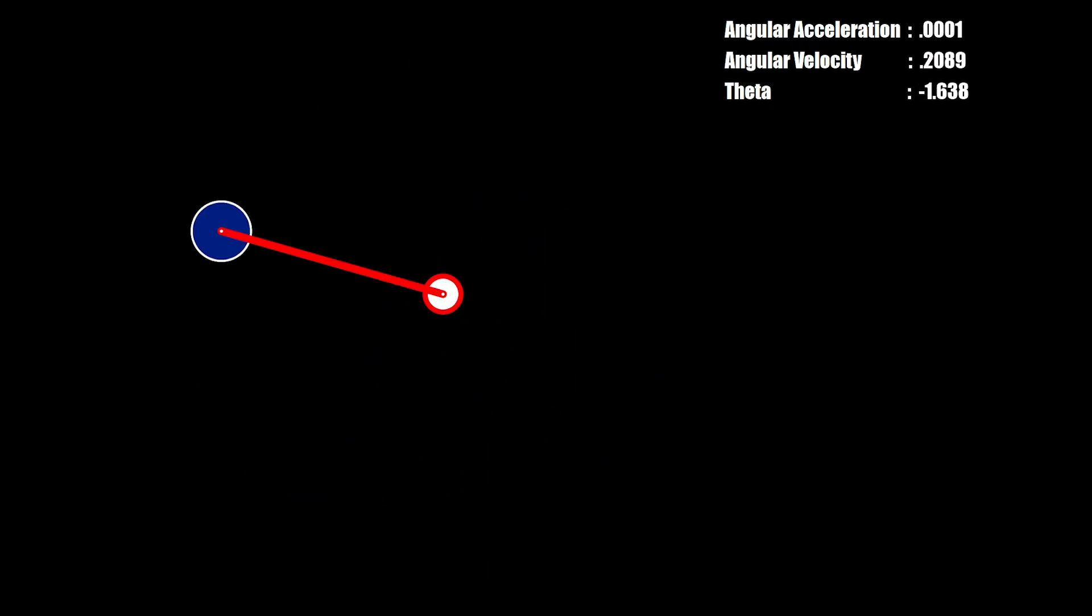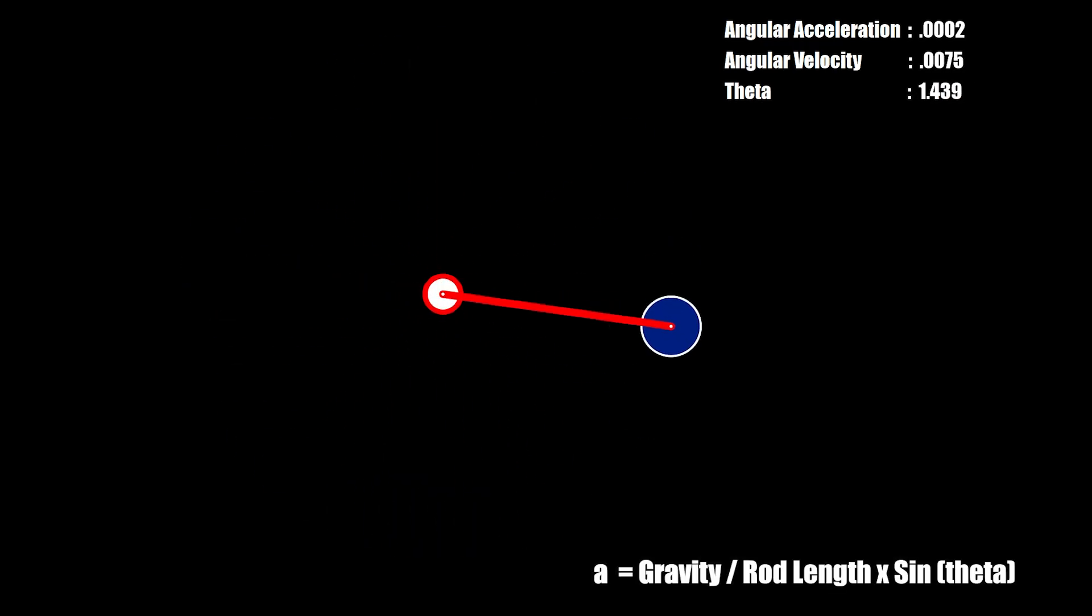That's the basic mechanics of a pendulum. To make it swing like a traditional pendulum all I need is the correct equations of motion to set the angular acceleration value. And this is it. It's simply gravity divided by the rod length multiplied by the sine of theta. Plug that in and away it goes. I can set the initial angle to anything I want and it'll swing between pi and minus pi. If I set it to zero it'll hang straight down.